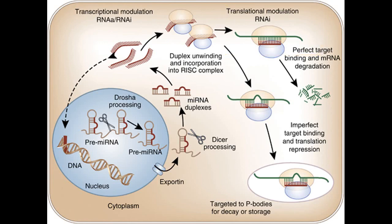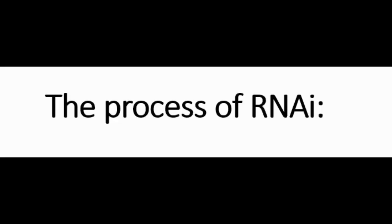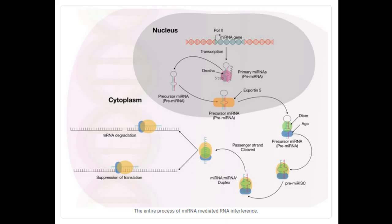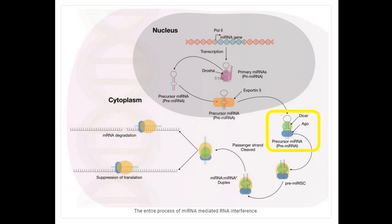The RNAi process is governed by smaller microRNAs that degrade mRNA and perform gene silencing. In the first step, the primary microRNA is transcribed from a gene by RNA polymerase II. The protein Drosha then processes the primary microRNA to form the precursor microRNA and transports it to the cytoplasm utilizing the protein Exportin-5.